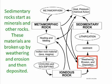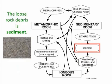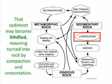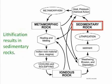Sedimentary rocks start as minerals and other rocks. These materials are broken up by weathering and erosion and then deposited. This is shown by the model called the rock cycle. The loose rock debris is called sediment. The sediment may be lithified — lithified means turned into rock — through the processes of compaction and cementation. Lithification results in the material becoming sedimentary rock.